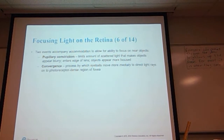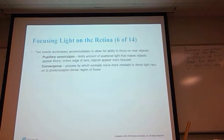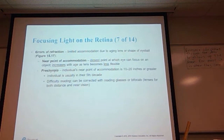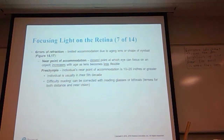Pupillary constriction limits the amount of scattered light that makes objects appear blurry — light entering the edge of the lens causes objects to appear more focused. Convergence is a process by which the eyeball moves more medially to direct light rays onto photoreceptor-dense regions of the fovea. When we have errors in refraction, there is limited accommodation due to an aging lens or the shape of the eyeball. Near-point accommodation — the closest point at which the eye can focus on an object — increases with age as the lens becomes less flexible.